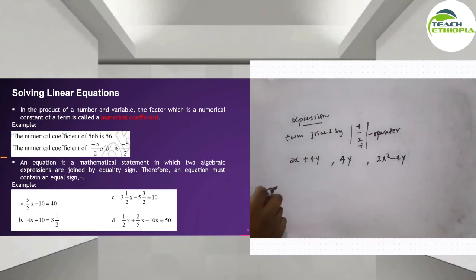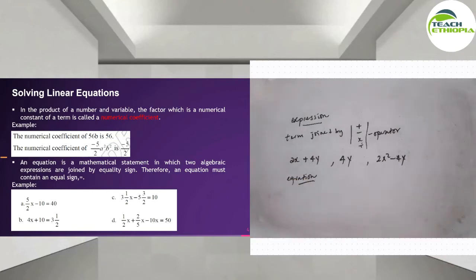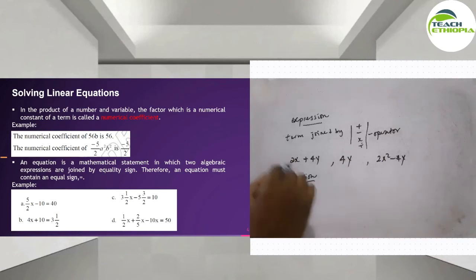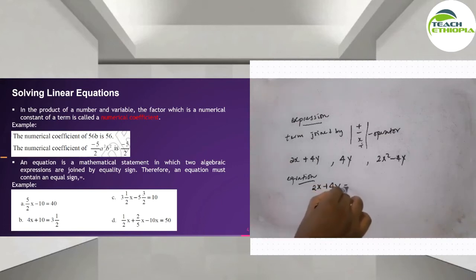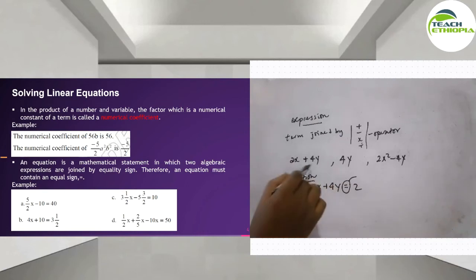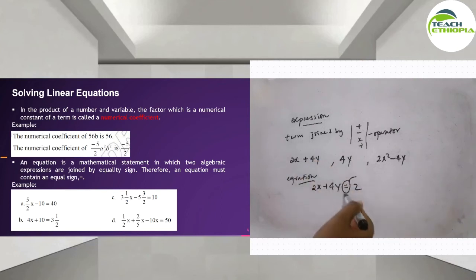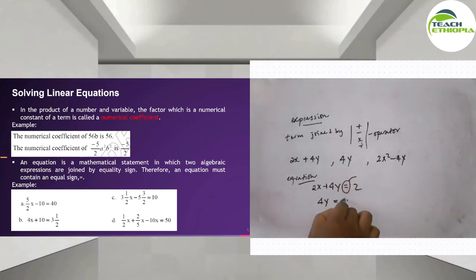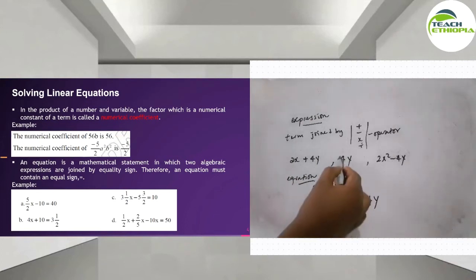So the equation — equations are mathematical statements in which two algebraic expressions are joined by an equal sign. For example, 2x plus 4y equals 2 — this is joined by an equal sign, so it is an equation. The equal sign represents the equation. Similarly, 4y equals 2x squared minus 4y — this is also an equation.